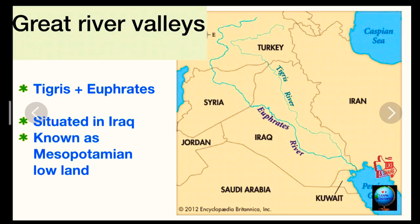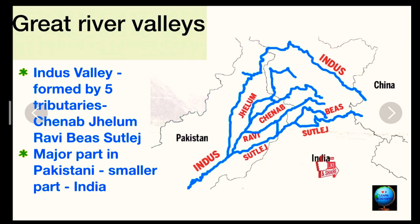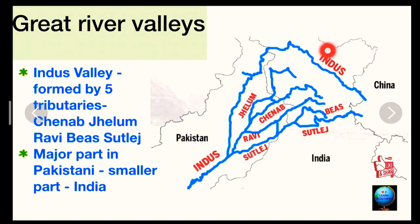The Indus Valley is formed by five tributaries of the main river Indus: Satlaj, Ravi, Jailam, Chinab, and Bias. The major part of this valley is located in Pakistan, with a small part located in India.